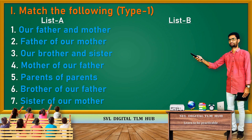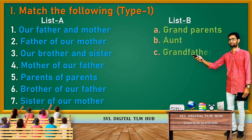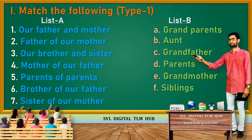Now observe List B. A. Grandparents. B. Aunt. C. Grandfather. D. Parents. E. Grandmother. F. Siblings. G. Uncle.